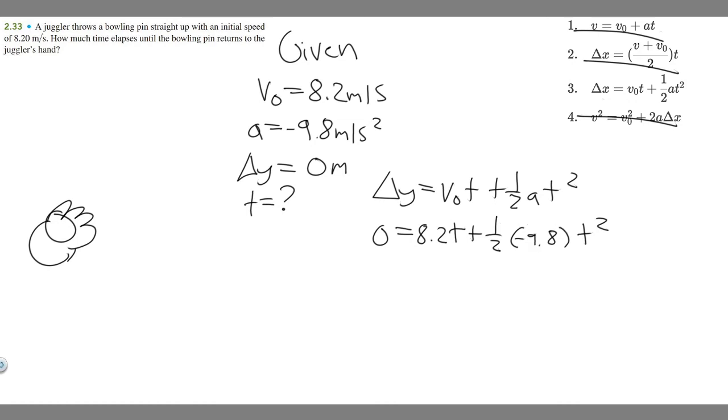So if we simplify this a bit, one half times minus 9.8 is minus 4.9. So zero equals, and I'm going to move this out front. So it's going to be minus 4.9 t squared. That's this part plus 8.2 t.